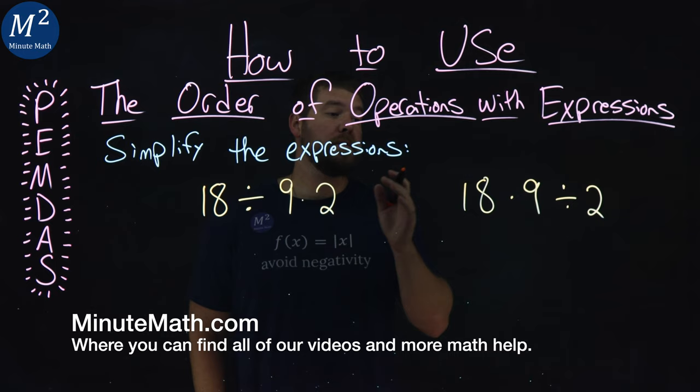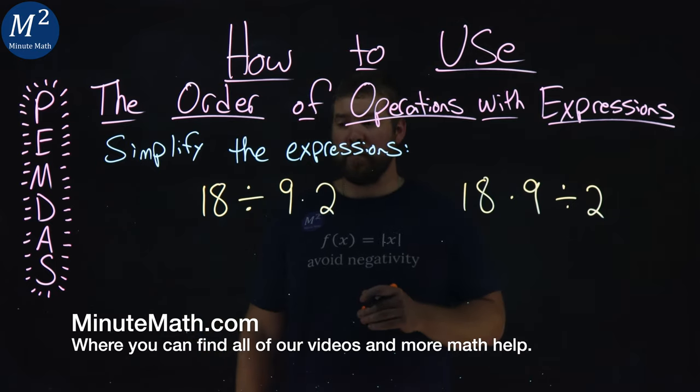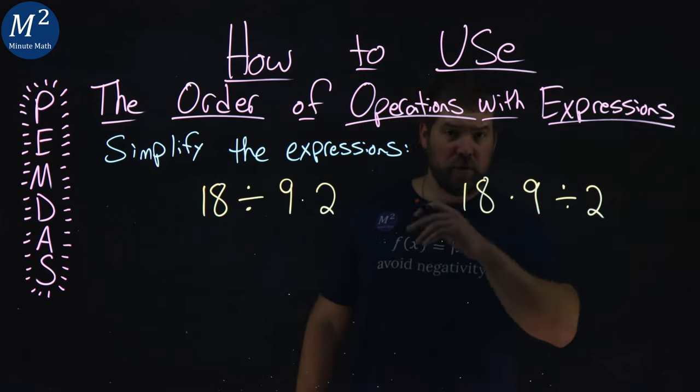We're given two expressions here that we need to simplify. They look very similar, but they will actually have different results. We have 18 divided by 9 times 2, and 18 times 9 divided by 2.